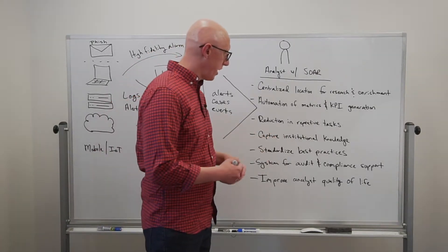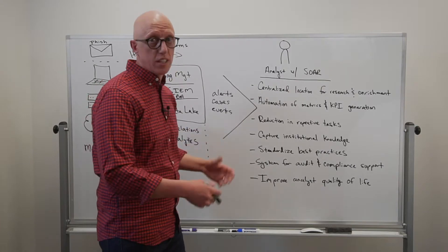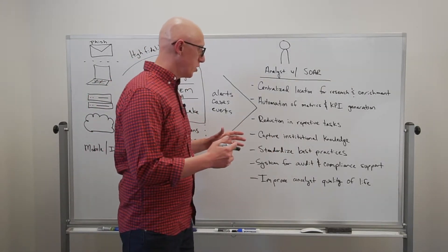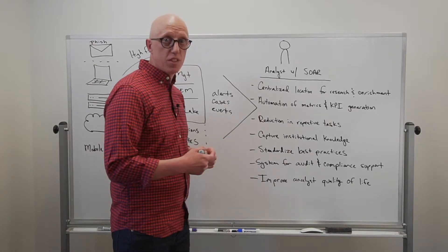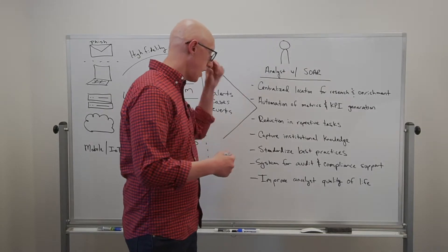Capturing institutional knowledge - as an organization, we have to deal with staff turnover. The ability to capture the things we learn about our environment and codify it into a system enables us to reduce the amount of times we have to start over as staff turns over and allows us to become a much more mature organization over time.